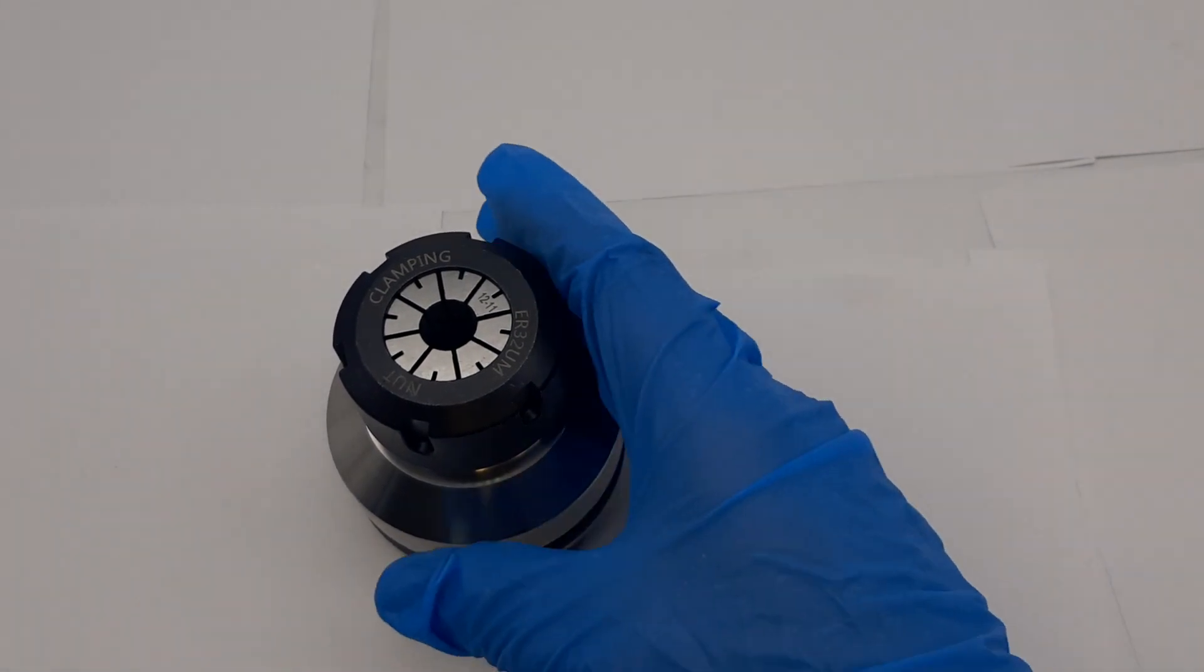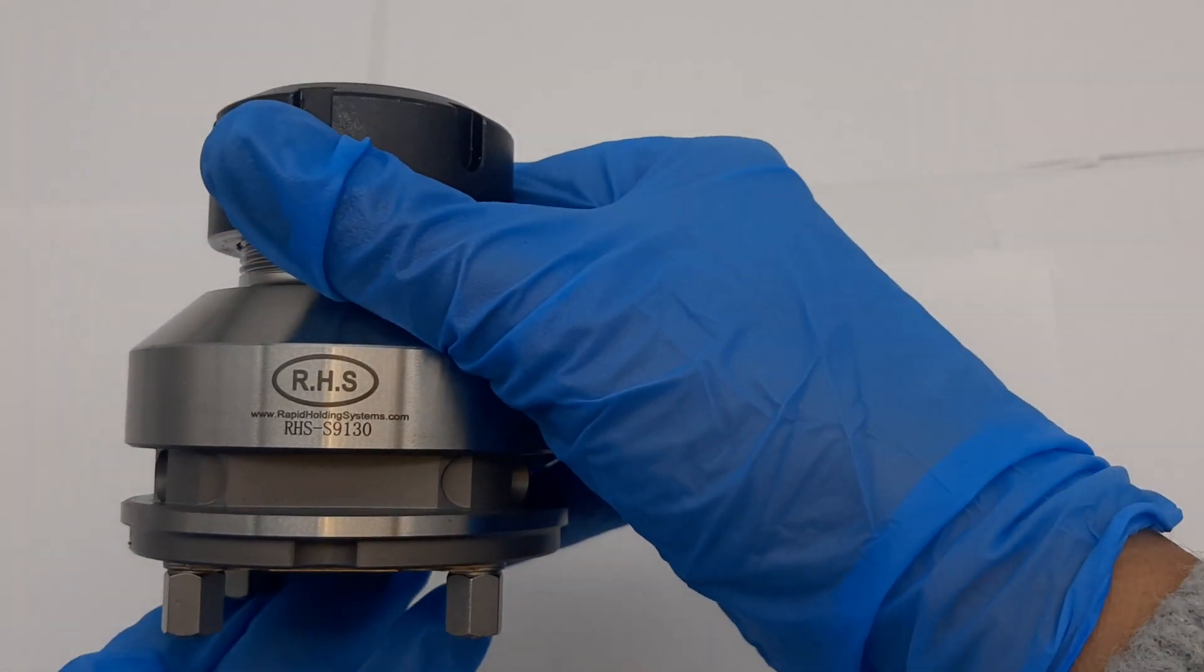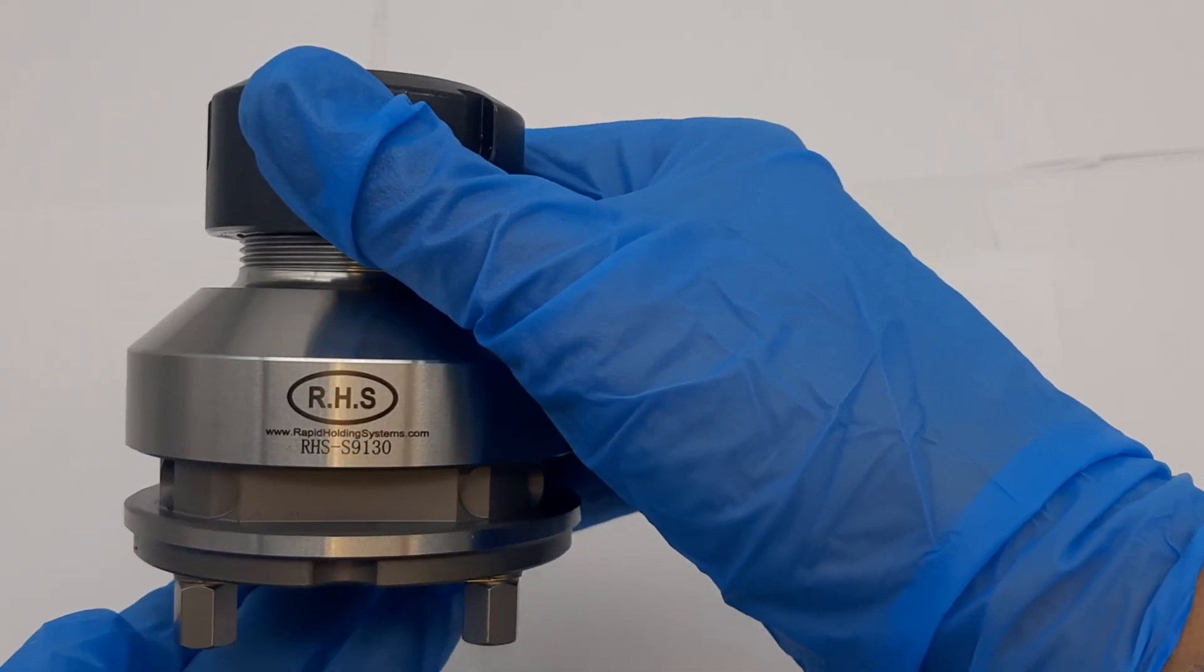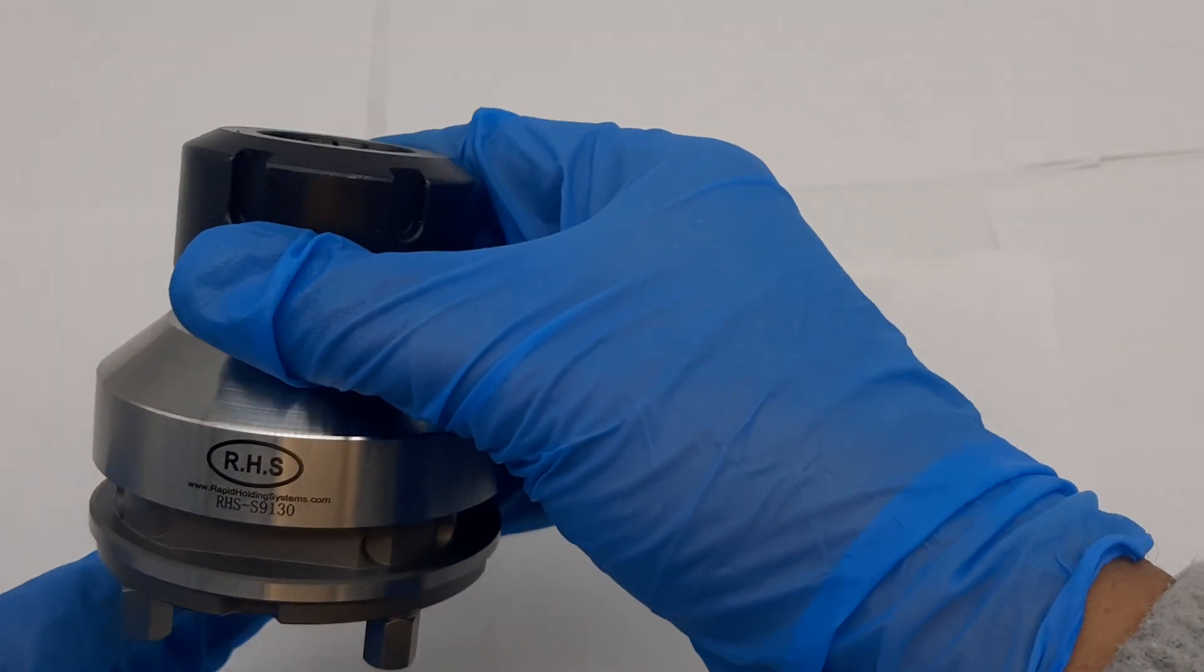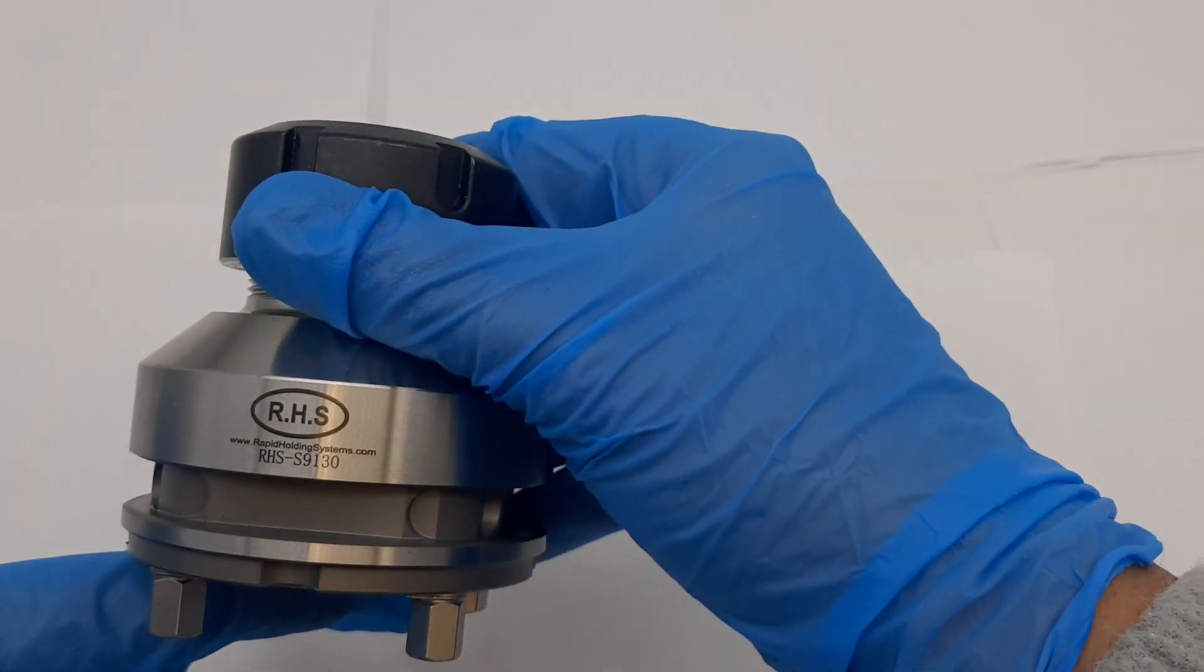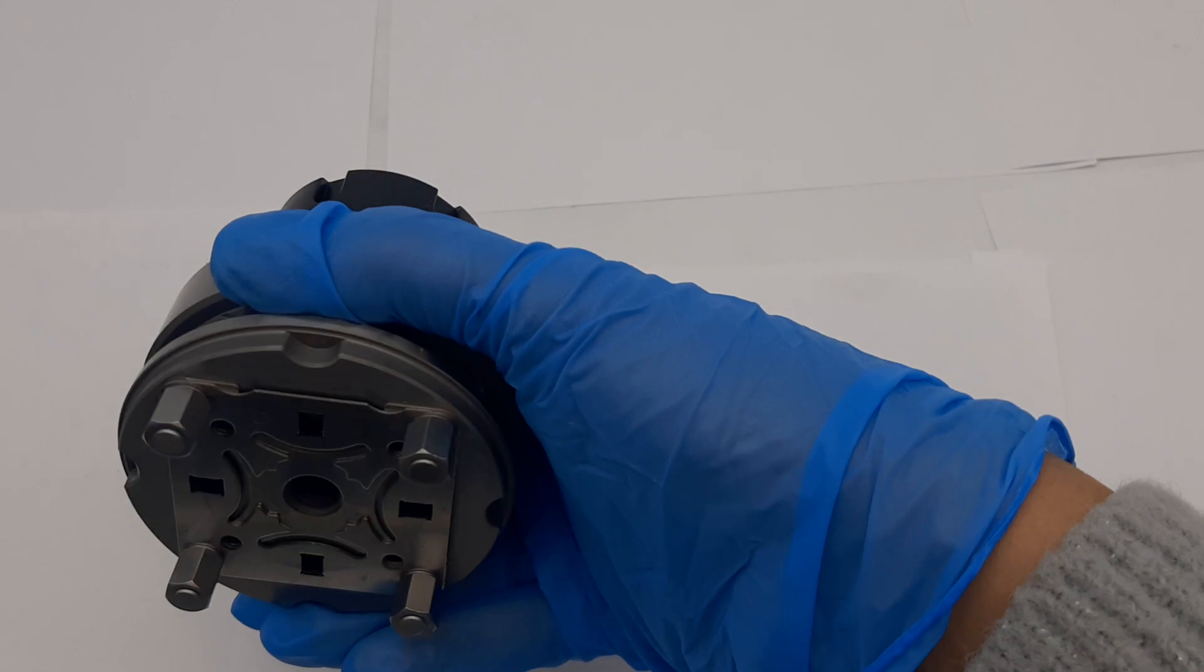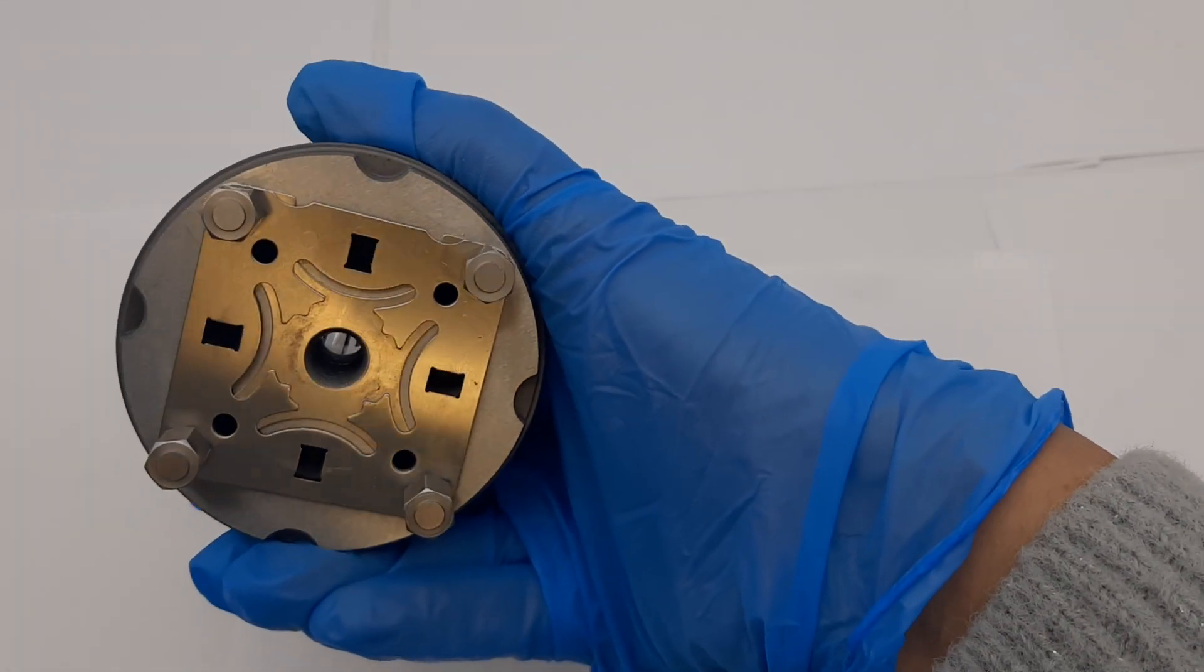Hello, this is Rapid Holding Systems showing you our Rapid Holding Systems Part RHS-S9130. This is our Rapid Holding Systems ER32 chuck holder. The system size is Aerova IDS50.